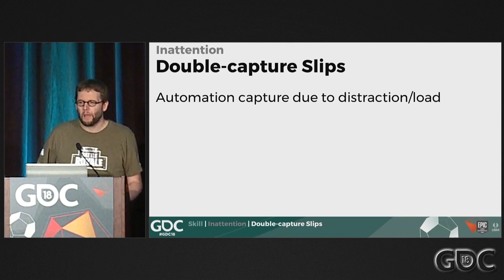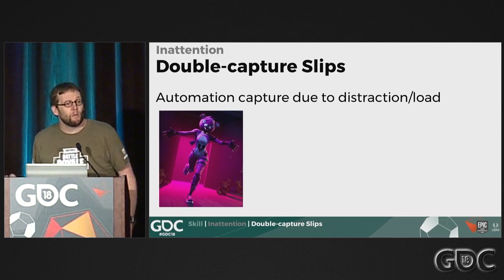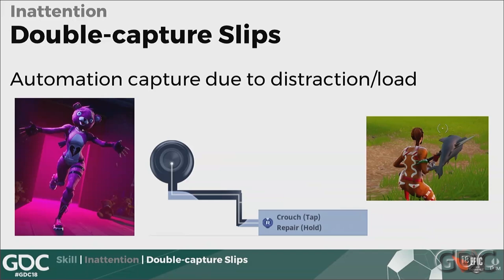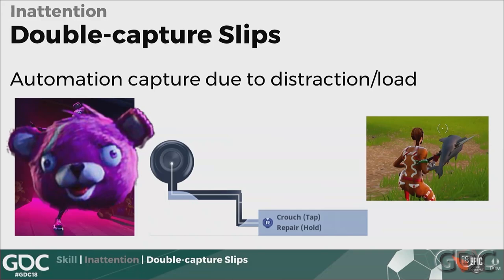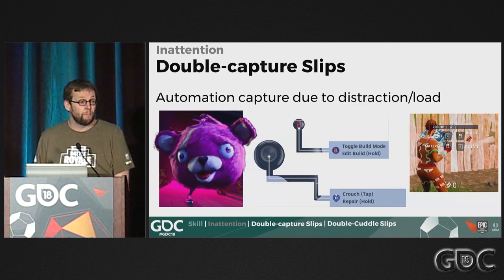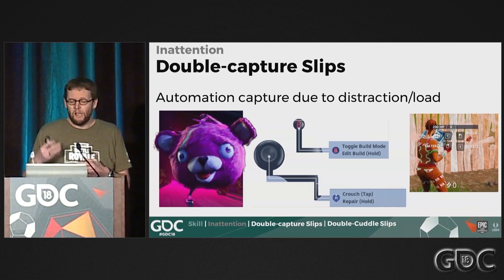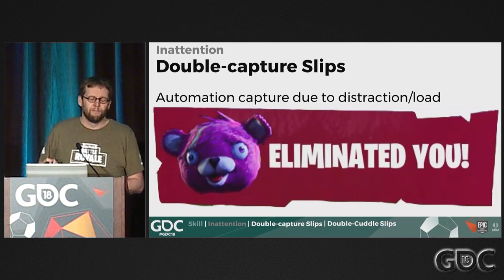Say you're playing Fortnite and out of the darkness comes a terrifying pink bear. What you want to do is crouch — in Fortnite, crouching is pressing the right stick, clicking it in. But the bear is scary and you're distracted, so instead you press B, which is commonly crouch in many games. That's a stronger automatic rule. But pressing B in Fortnite goes into build mode, not crouch, and then the bear takes you out. This is an example of making a double capture slip.